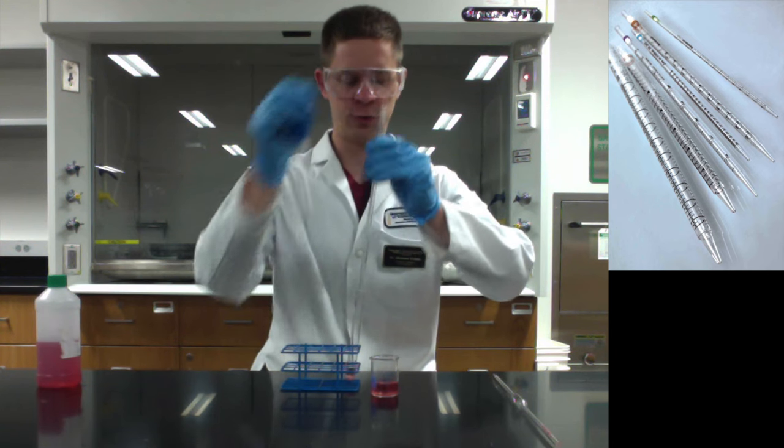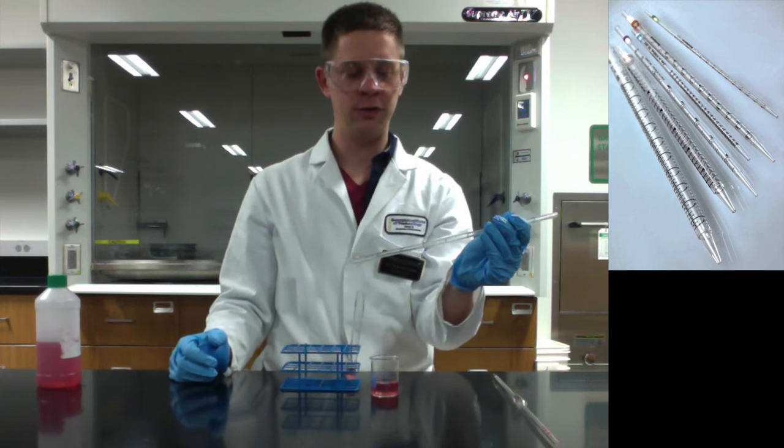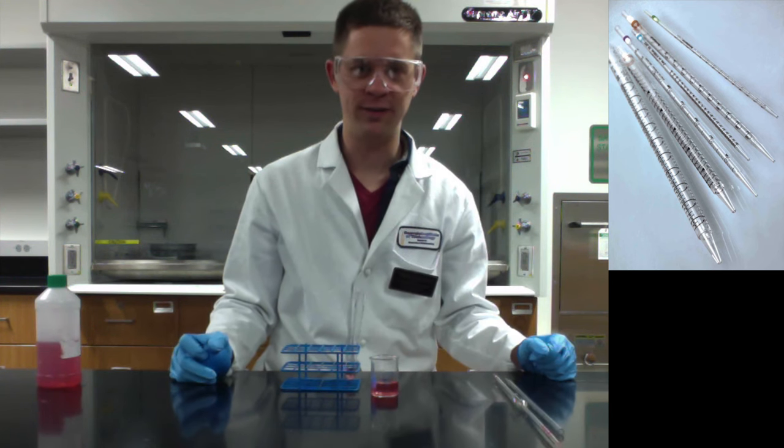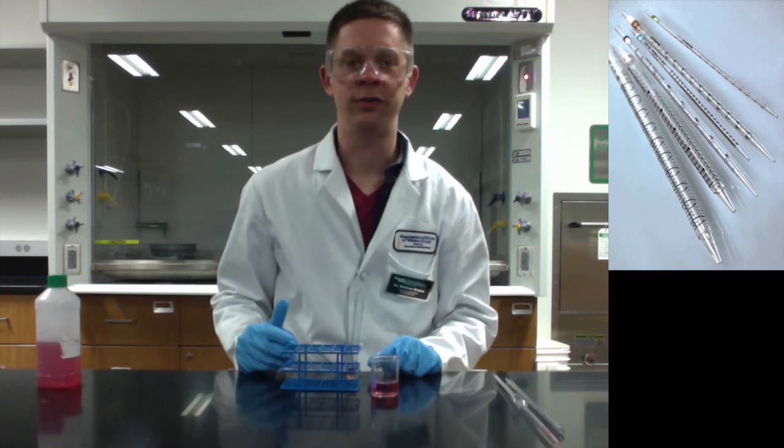Just use your pipette bulb to squirt out that last little bit of liquid so that the pipette itself is completely empty. And you've just delivered 2.6 milliliters of liquid with the serological pipette.